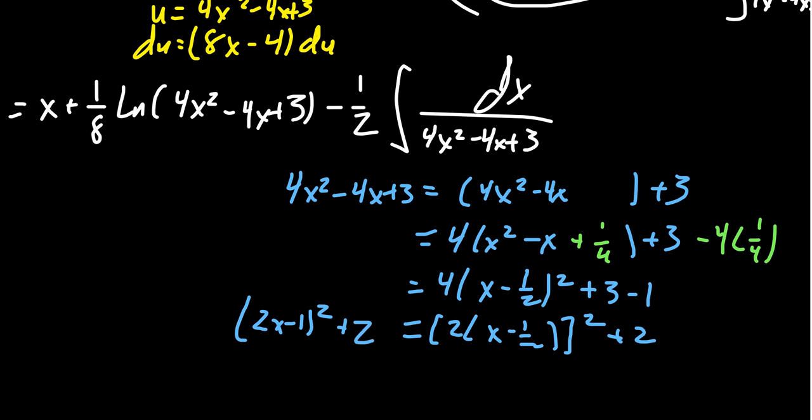I should mention here that 4 itself is a perfect square. You could write this as 2 times (x minus 1/2) squared plus 2. This has the advantage that you could write this as (2x minus 1) squared plus 2. So now it took a little bit of effort, but we can now complete the square. If you wanted to do a tangent substitution, you would then set 2x minus 1 equal to the square root of 2 tangent theta, and you could proceed to go from there.